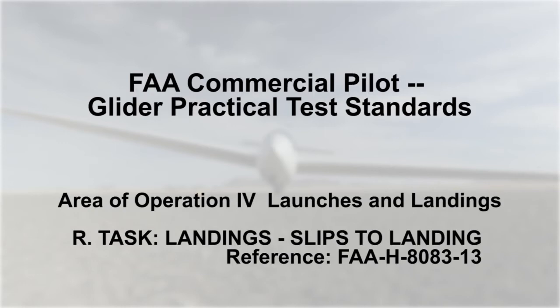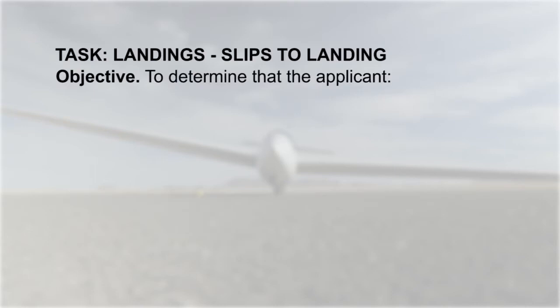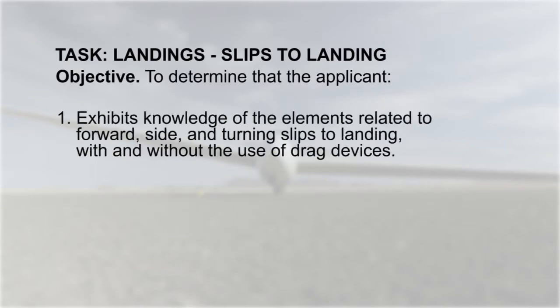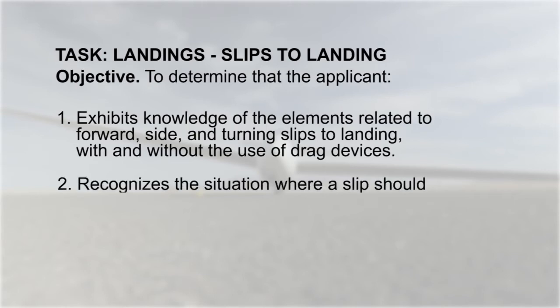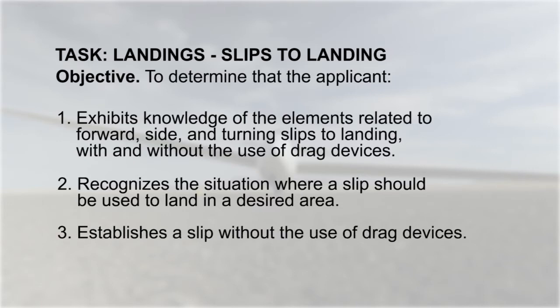The examiner will select one type of slip from the knowledge area for demonstration. The objective of this task is to determine that the applicant: 1) exhibits knowledge of the elements related to forward, side, and turning slips to landing with and without the use of drag devices; 2) recognizes the situation where a slip should be used to land in a desired area; 3) establishes a slip without the use of drag devices.